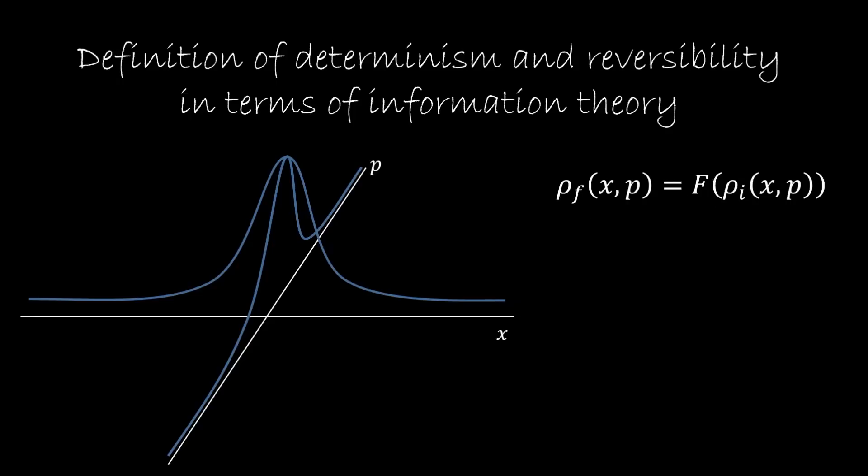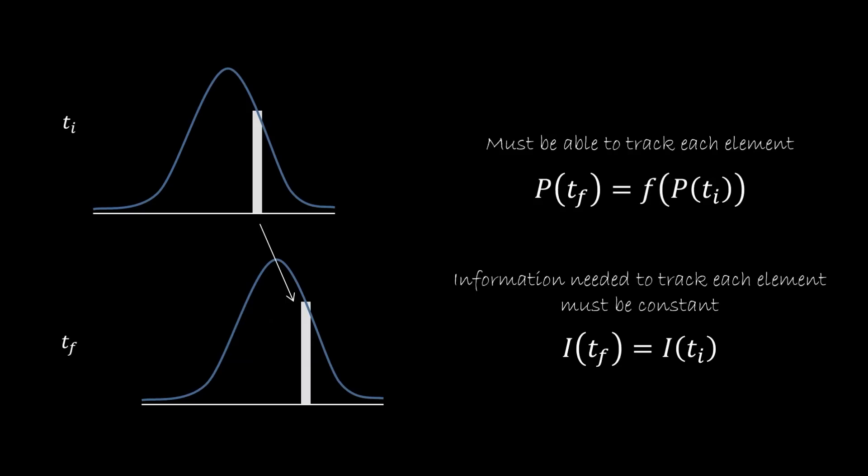But this is not enough. In order to have real determinism and reversibility, what we need to be able to do is track each of the elements of the distribution. So not only do we have to say how the whole distribution evolves in time, but that this particular element of the distribution is going to be mapped to this particular element. So the final state of each infinitesimal element needs to be a function of the initial state of each infinitesimal element.